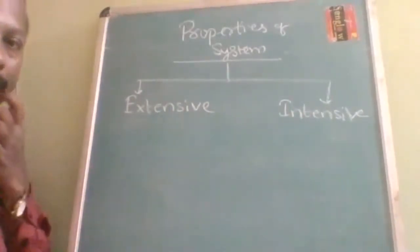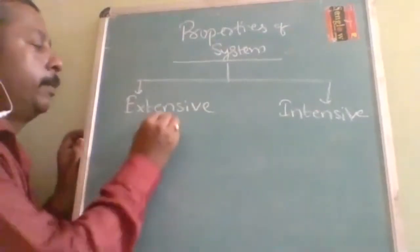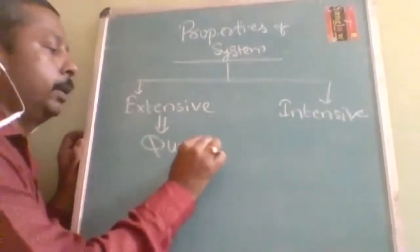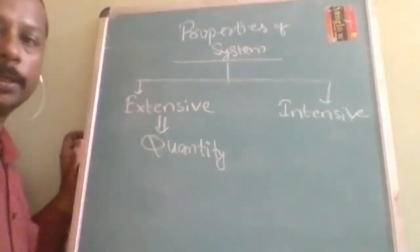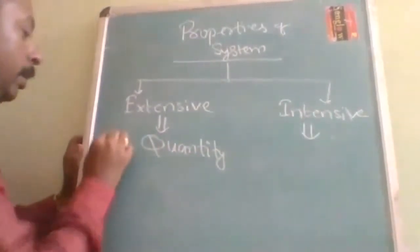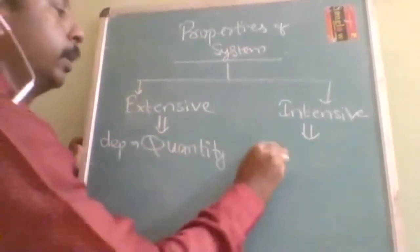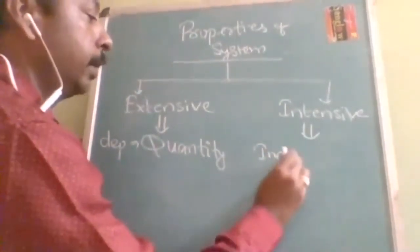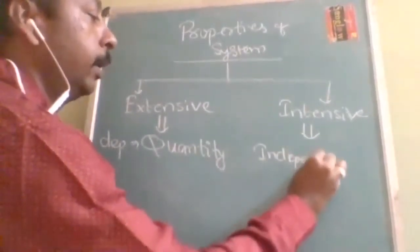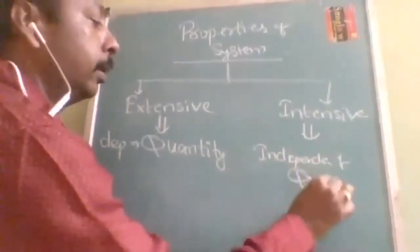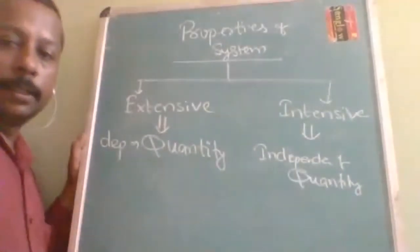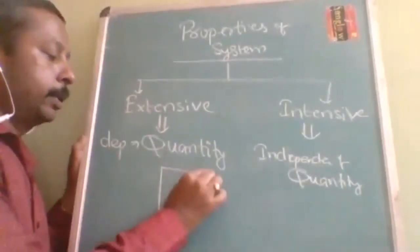These properties are classified based on quantity. Certain properties which depend on quantity are called extensive properties. Properties which are independent of quantity are called intensive properties. I will explain the meaning through examples.